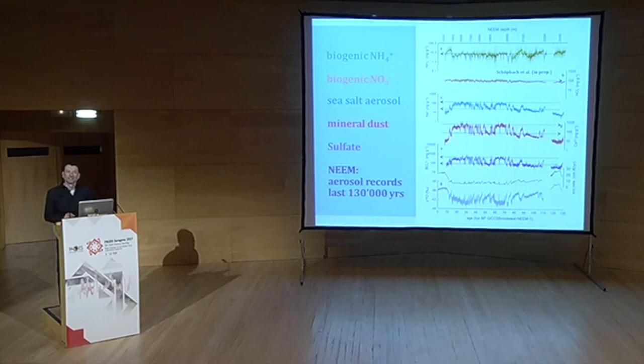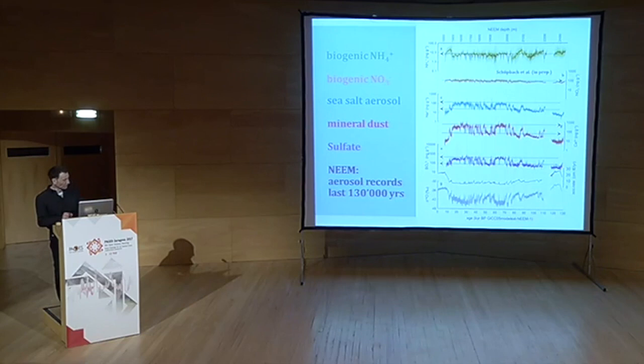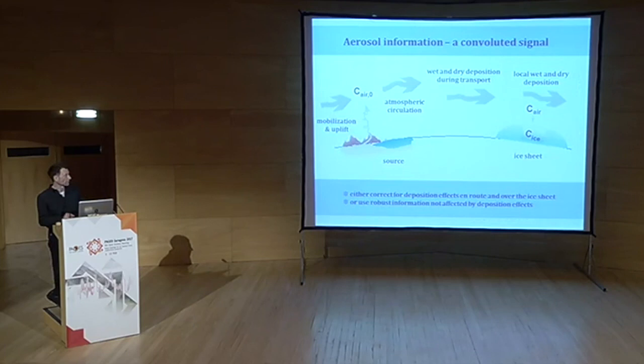You can already see quite clearly that there is a strong imprint of the Dansgaard-Oeschger events — for example, in mineral dust aerosol there's a factor of more than 10 change between stadial and interstadial conditions. Remember that number, but don't memorize it too firmly, because the chemistry we measure in the ice is a convoluted signal of several things.